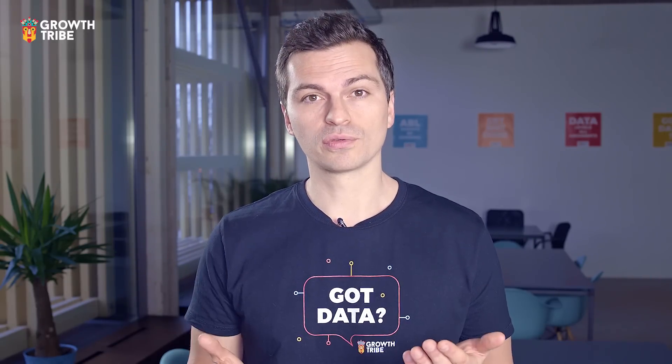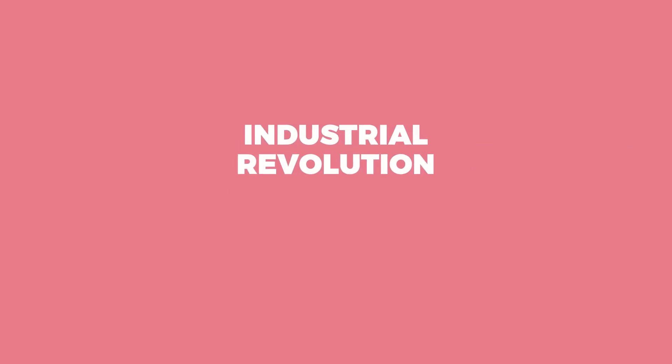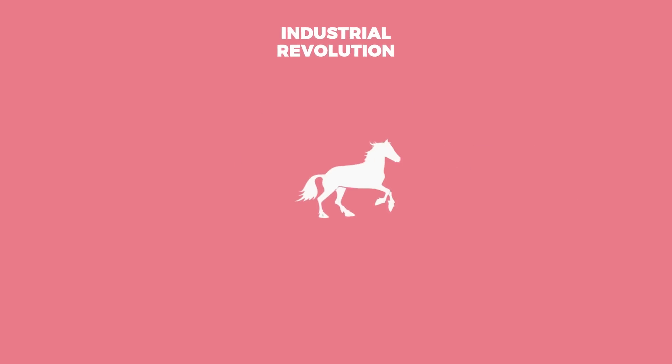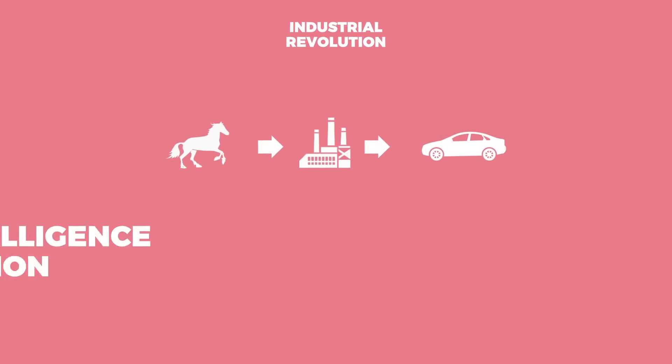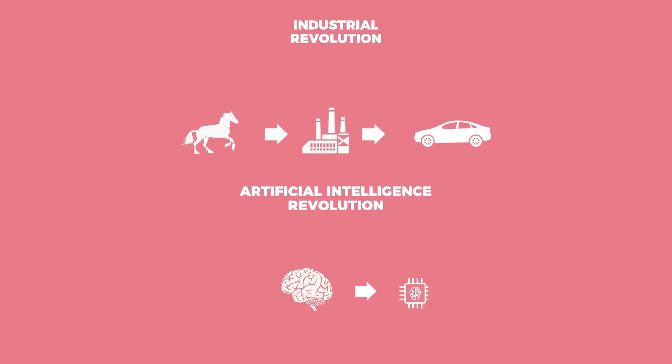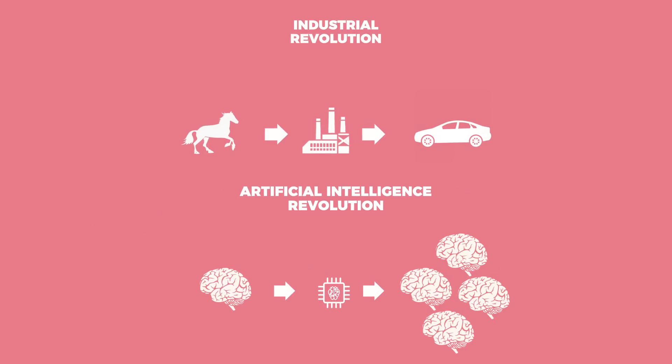At Growth Tribe we train people in their first steps with AI for marketing and growth. Let's use a small analogy. Just like the Industrial Revolution took us from one horse to 450 horses, AI and machine learning are taking us from one brain to thousands of brains working simultaneously to help us answer business questions.